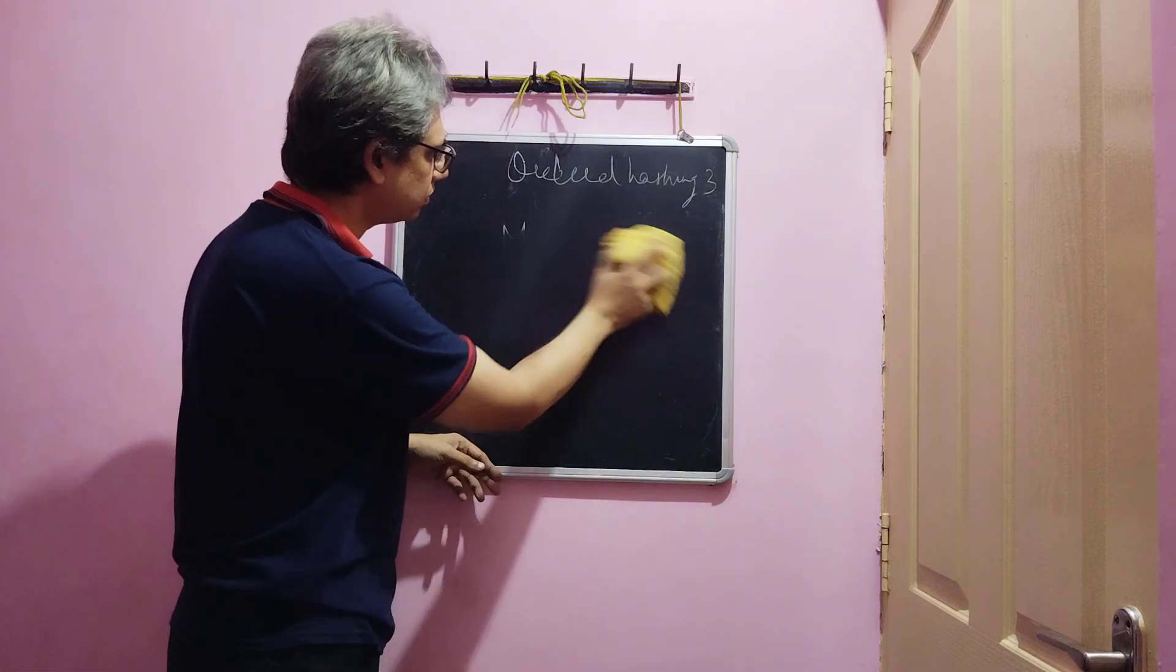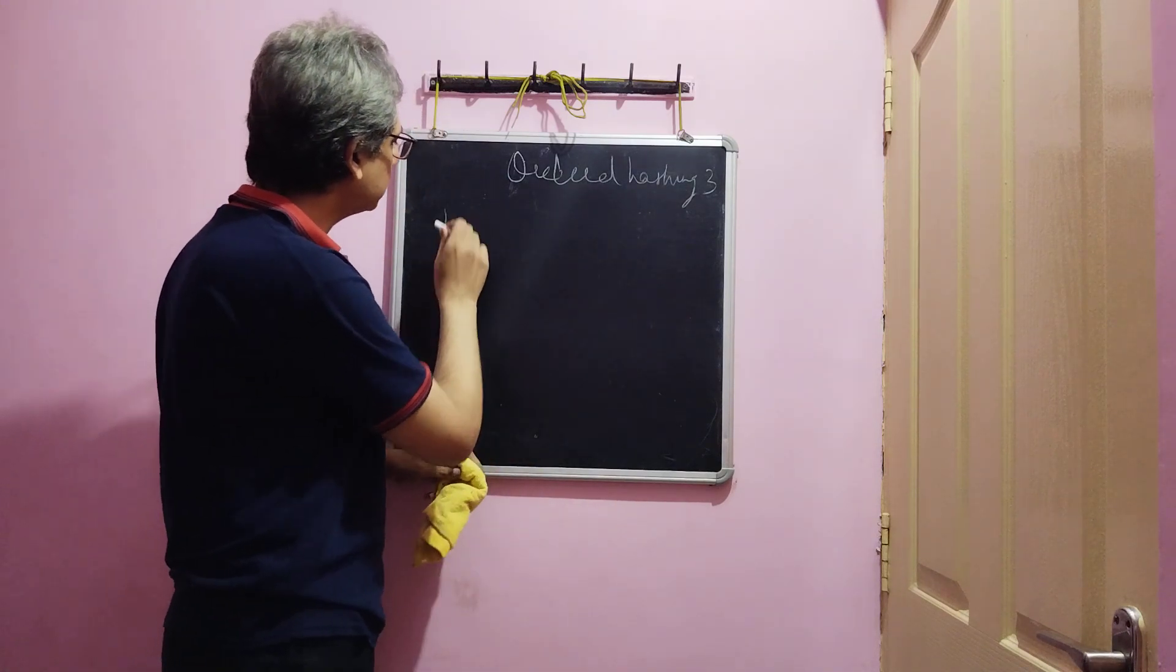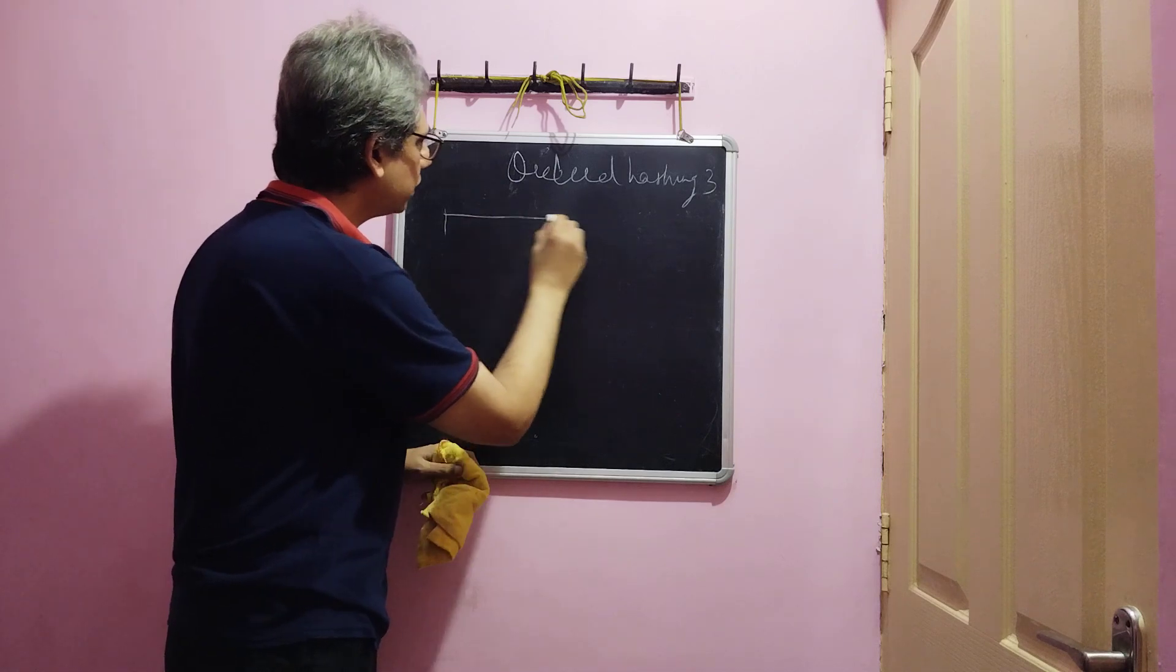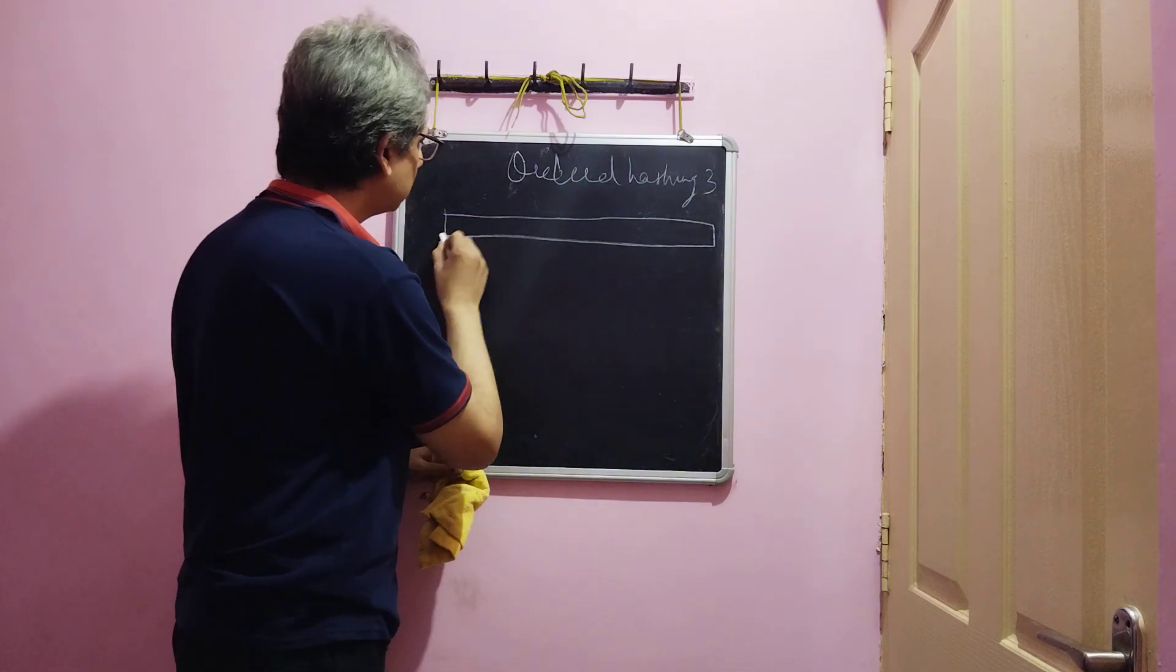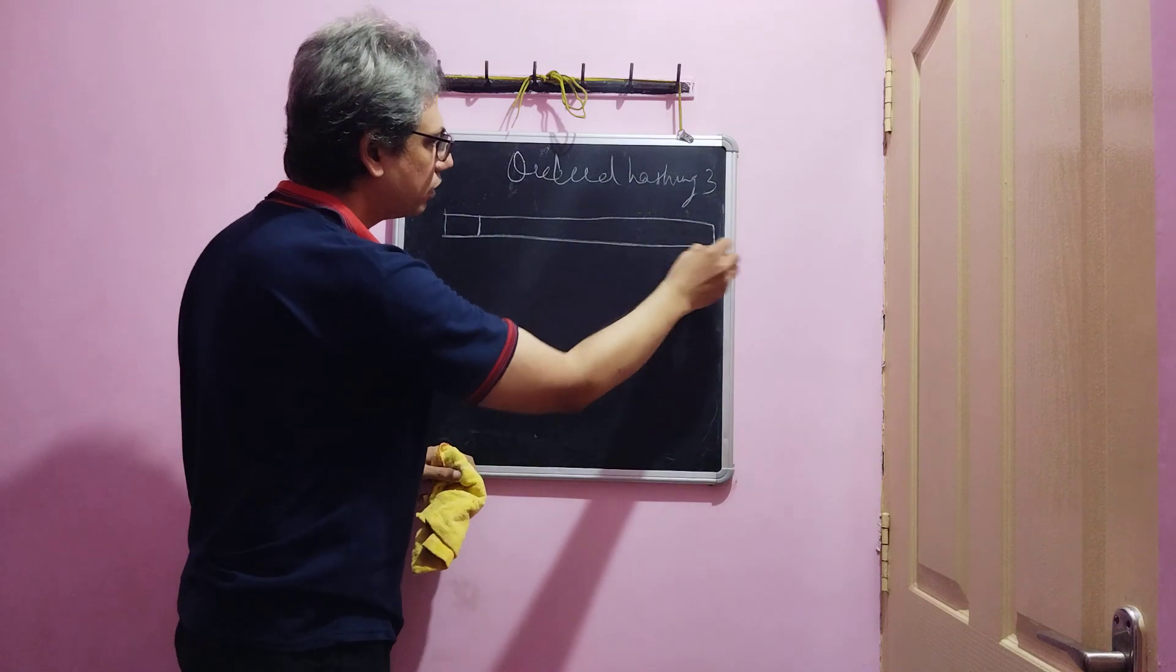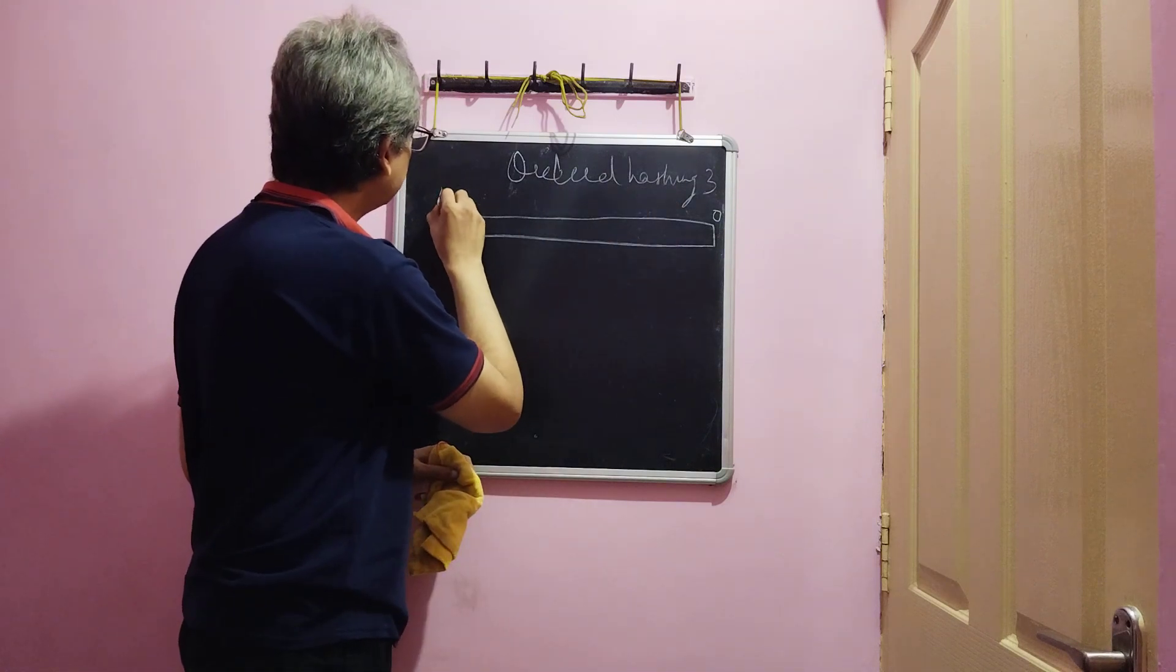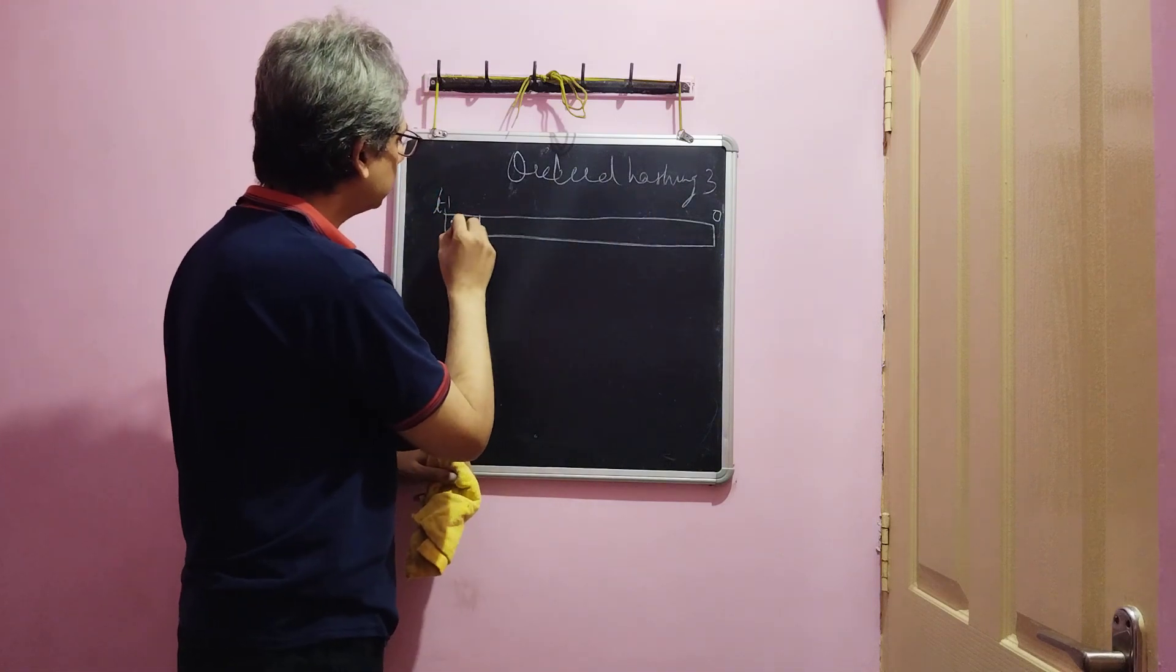The method is very simple and it is ideal and it can be used for data compression as well. So if we take these n bits, leading n bits, if this is the value of information to be hashed, this is l bits. The 0th bit is here, l dash minus 1th bit is here, and these are n bits.